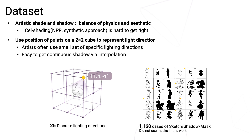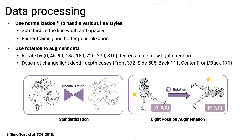We contribute a novel dataset which consists of 1,160 cases of sketch, shadow, and mask, though we didn't use masks in this work. We have 26 kinds of discrete lighting directions in this dataset. We use synthetic data to train a light pre-processing deep learning model to normalize the inputted line drawings, making them have the same line width.